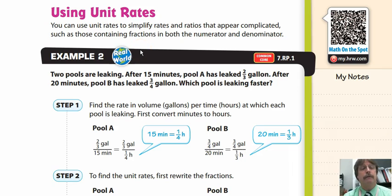We have here using unit rates, simplifying rates and ratios. Two pools are leaking. After 15 minutes, pool A has leaked a half gallon. After 20 minutes, pool B has leaked three-quarter gallon. Which pool is leaking faster? We have to do a comparison. That is so key for you guys.